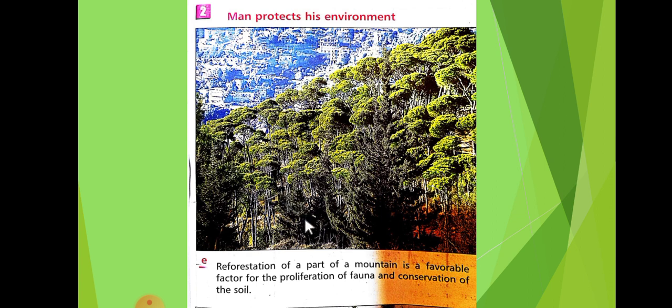And conservation of soil — رح نحمي الترب from erosion. In mountains, the land is sloped, so any wind can cause soil erosion. But once we plant on these mountains, the roots of the plants will protect the soil from erosion — the roots will hold the soil and keep it stable.